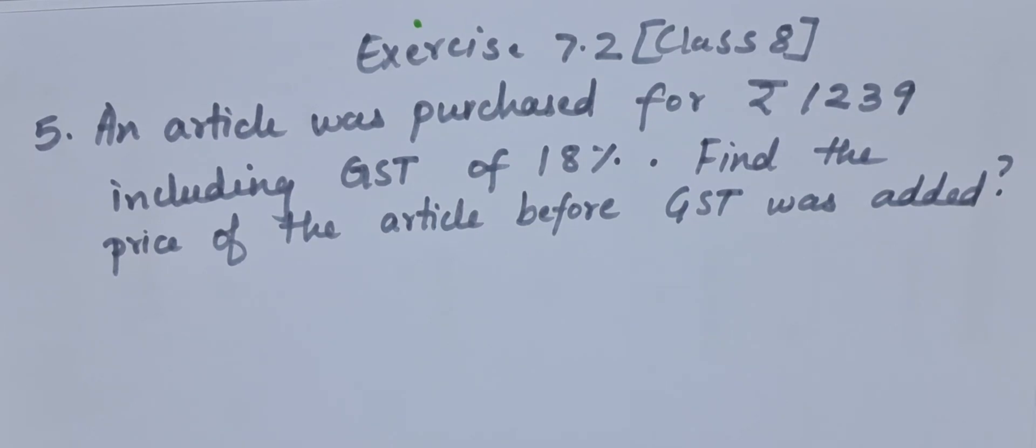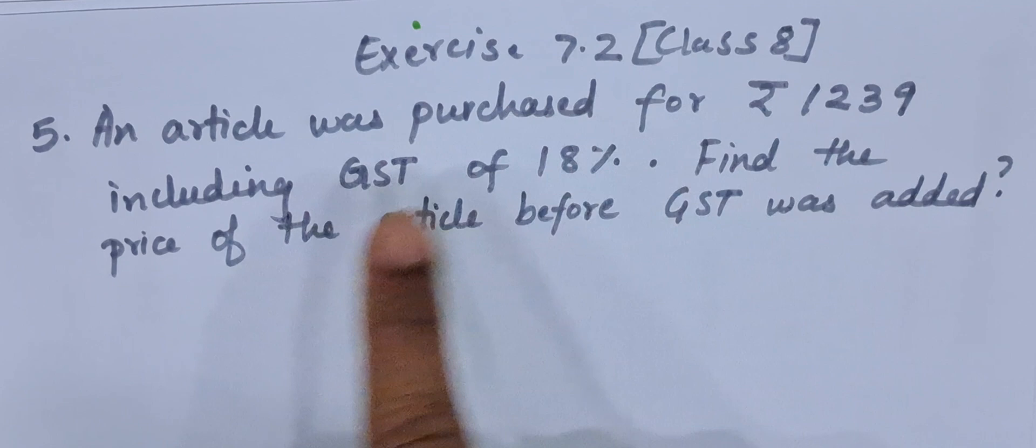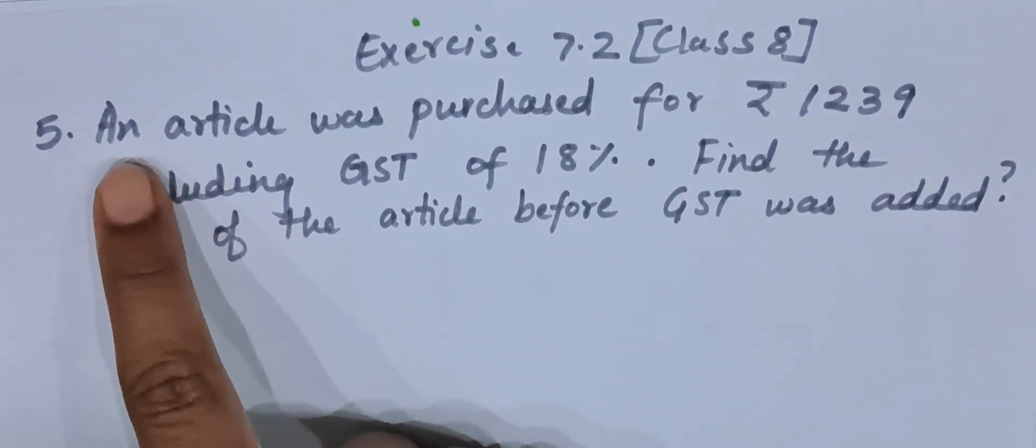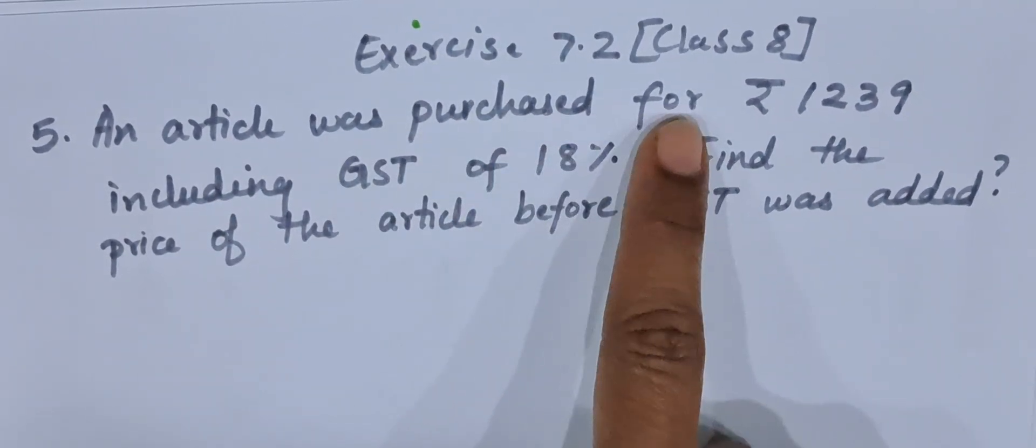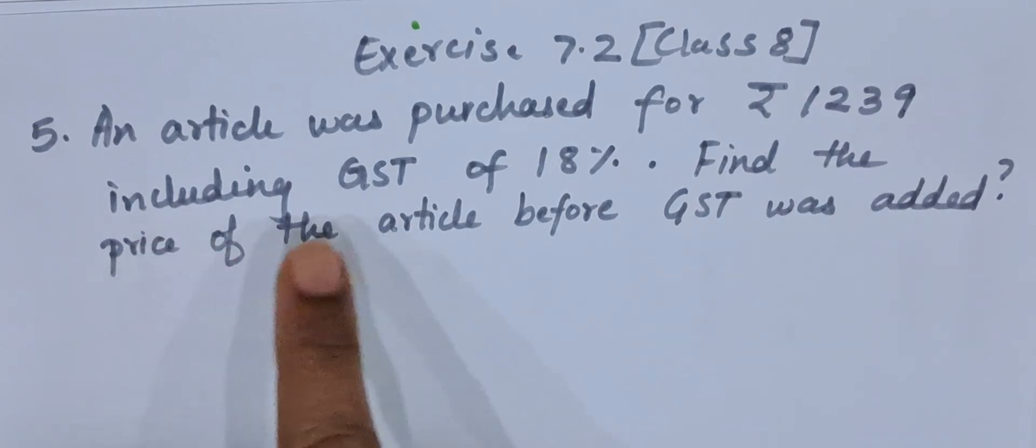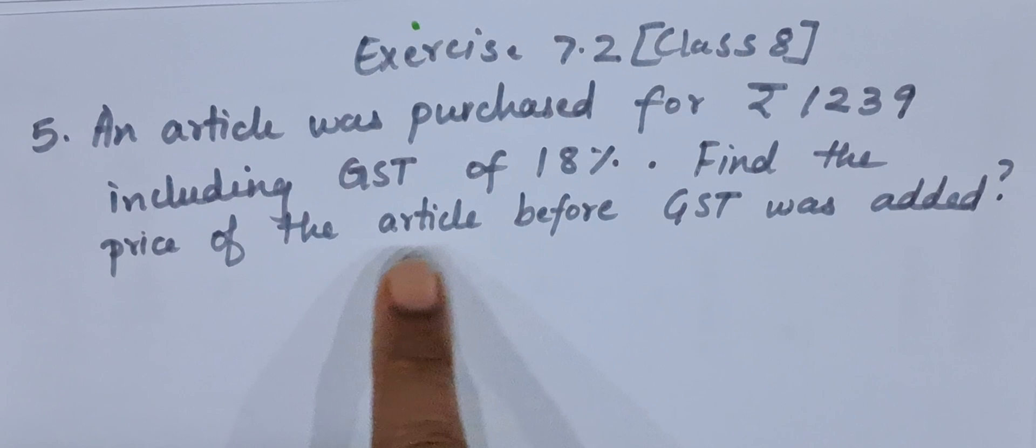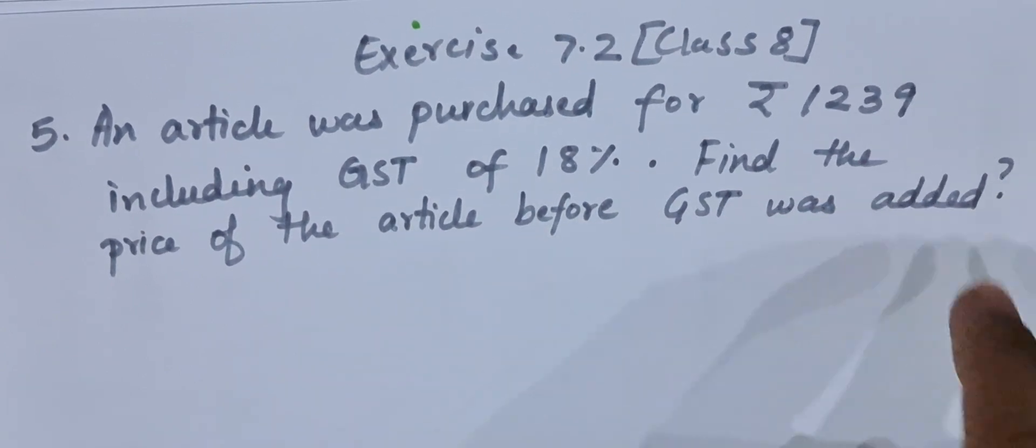Hello everyone, today we are going to do question number 5 of exercise 7.2 class 8. The question goes like this: an article was purchased for rupees 1239 including GST of 18%. Find the price of the article before GST was added.